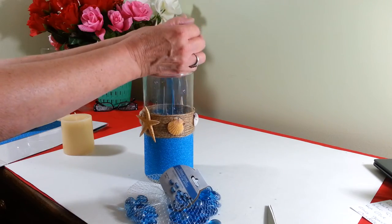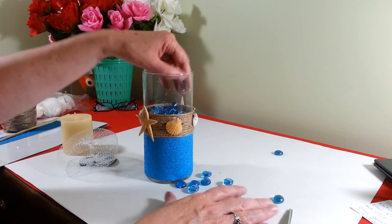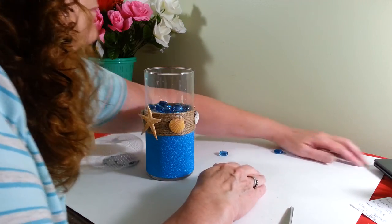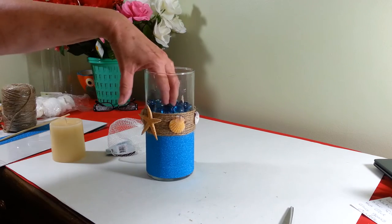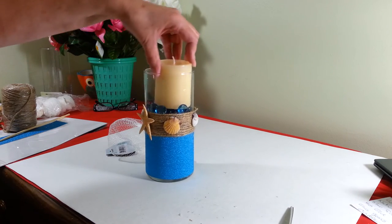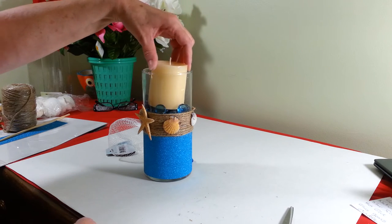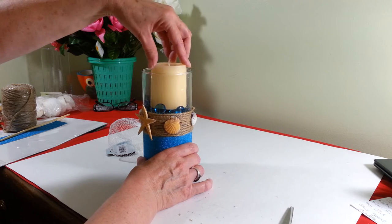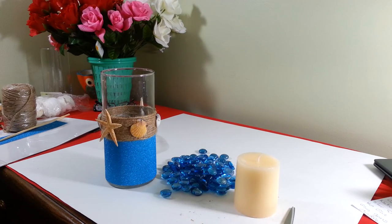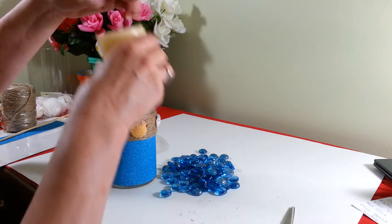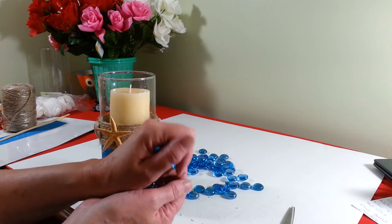And then we're going to just place in our gems. That's good. I'm going to reach them aside so I can wiggle my candle in. Now we're going to place in our candle. Center that. And then we're going to put some of these gems down around the sides of it.